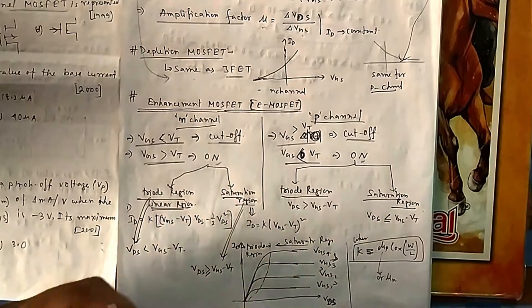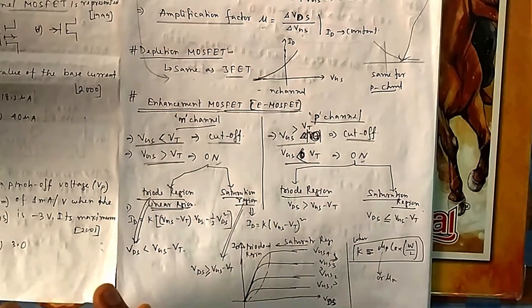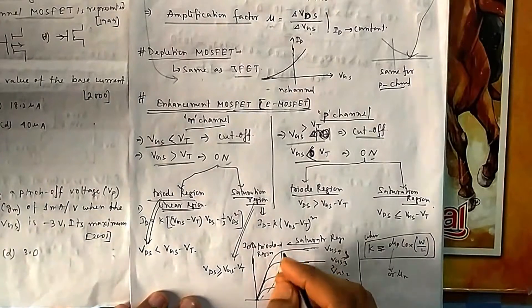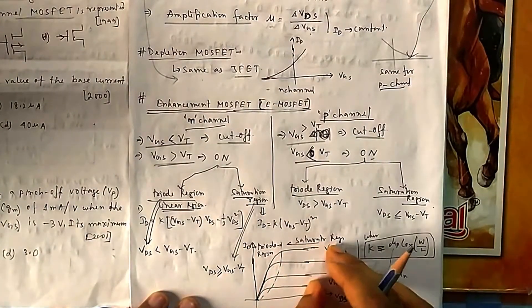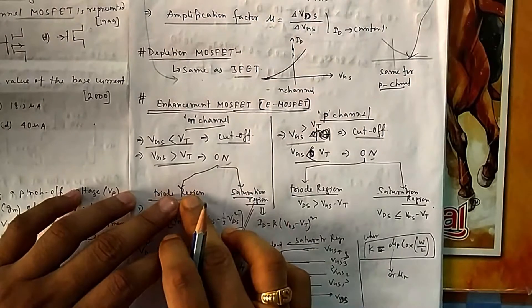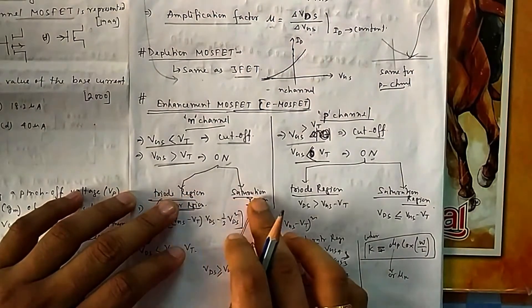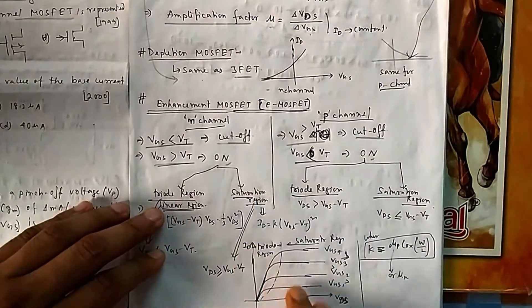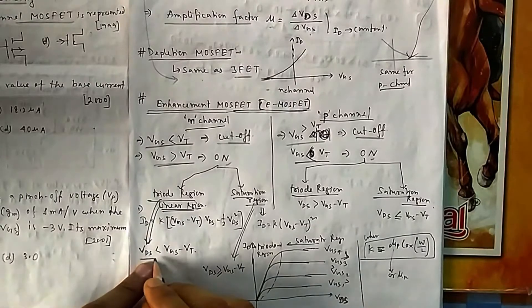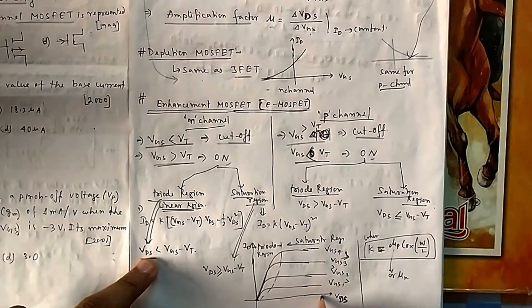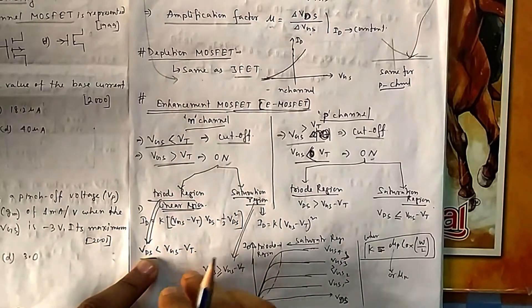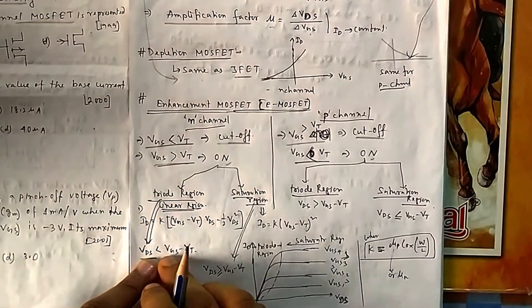For numerical problems, knowing the saturation region formula is sufficient — you don't need the deep theory of the triode subregions. Triode is also known as the linear region. Once the device is on, increasing V_DS first keeps it in triode, then it reaches saturation.